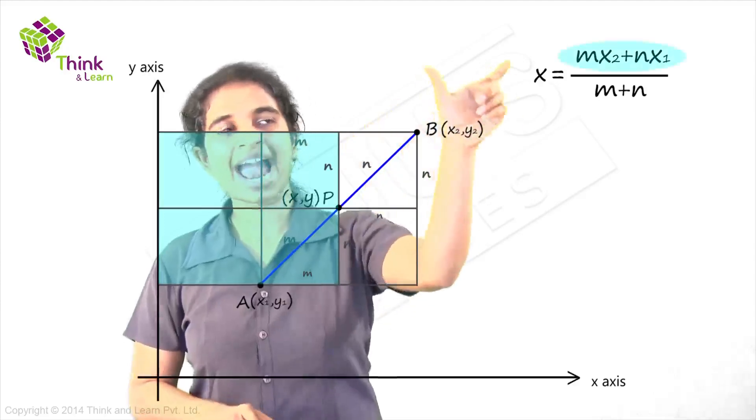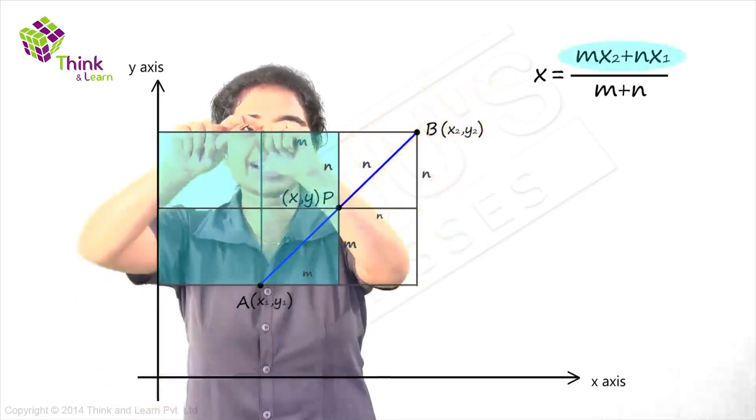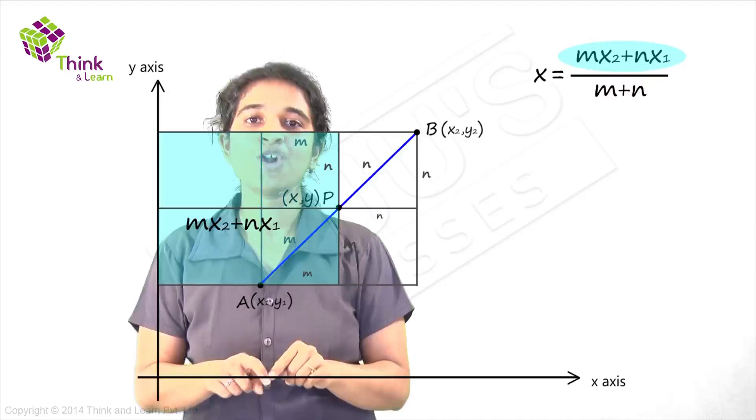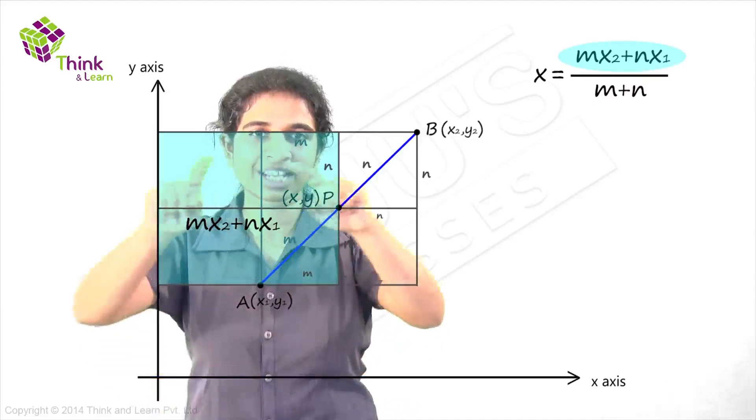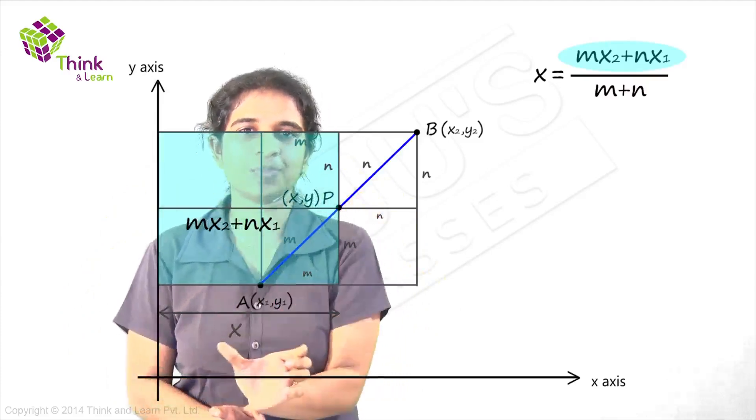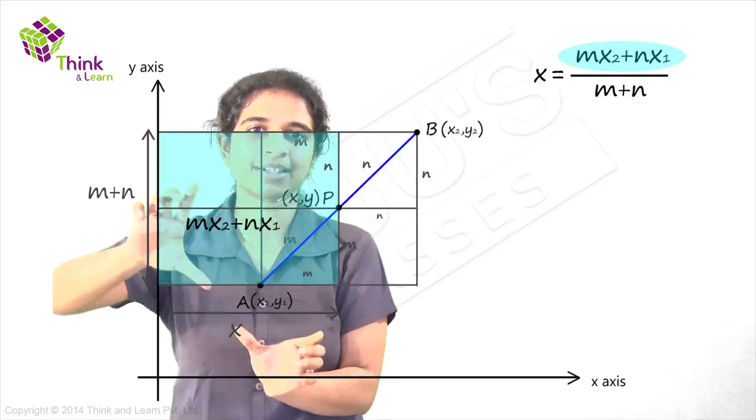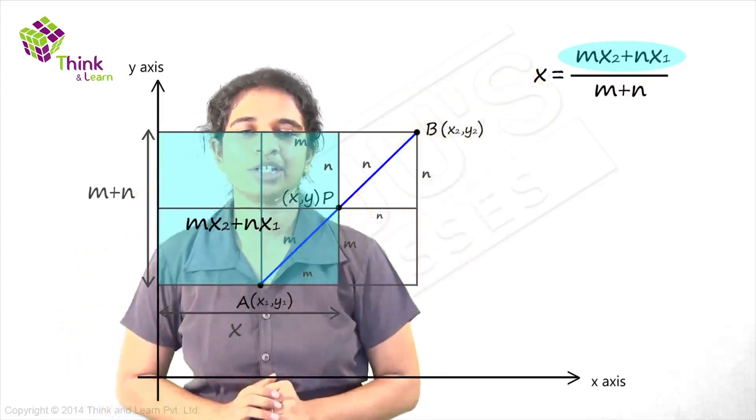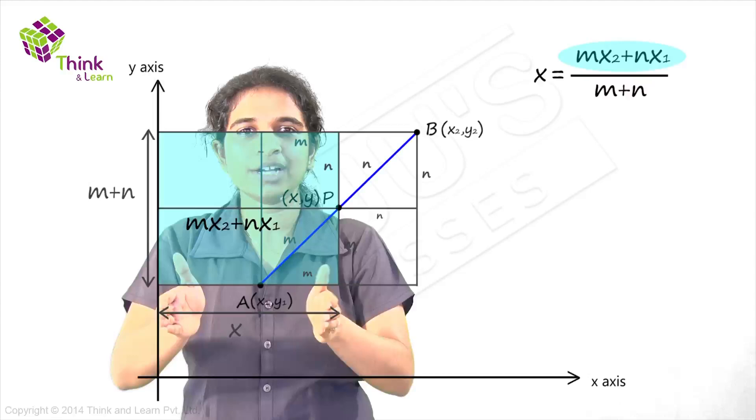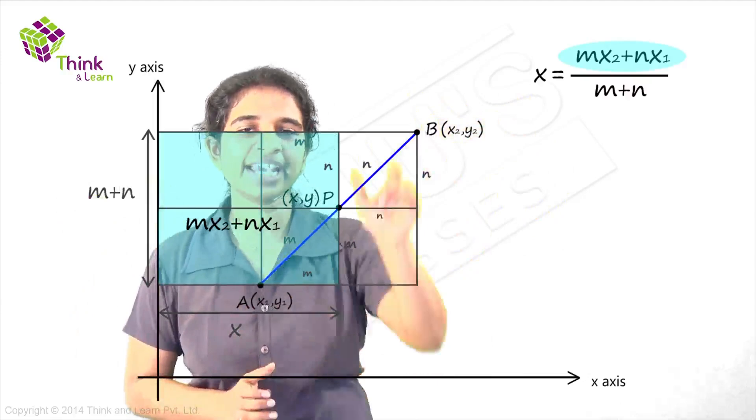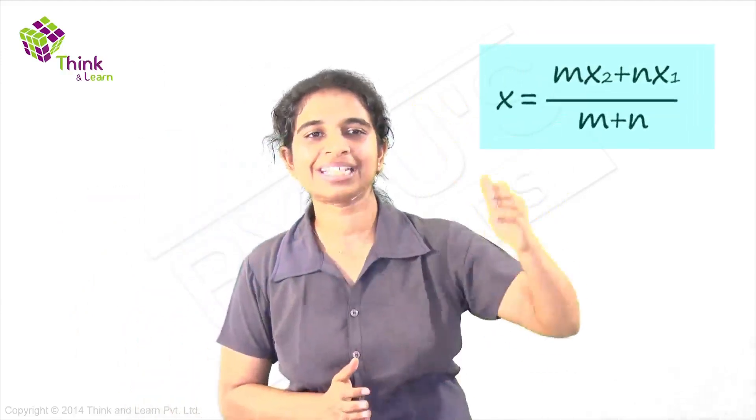So this term that I had in my numerator, mx2 plus nx1, is nothing but area of this rectangle. What is this rectangle? This rectangle is a simple rectangle which has length x, the x coordinate of P, and breadth m plus n. And the area I know is mx2 plus nx1. Now if I need to find out the length, what will I do? I'll divide the area by the breadth. I take m plus n, divide the area by it, I'll get the length. That's how you get x is mx2 plus nx1 by m plus n. This is a visualization.